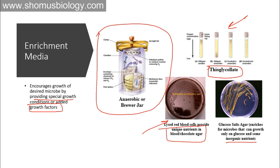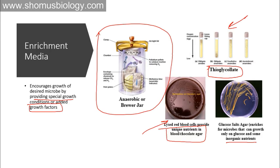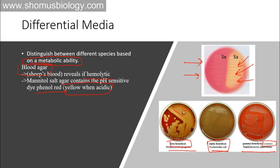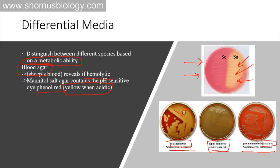Sometimes one medium can be termed both enrichment and differential at the same time — blood agar is a good example of this. When we use the terms differential medium, enrichment medium, and selective medium, we are classifying media based on different points of view, different properties, and different approaches. Enrichment medium allows growth of a particular type of bacteria; differential media distinguish growth patterns, shapes, sizes, and structures in the same medium for identification; selective media gives information on growth of only the desired microbe and not others.